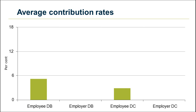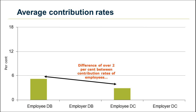Focusing on employees, this slide shows that the average employee in private sector defined benefit schemes contributed 5.2% of their salary to their pension in 2009. This compared with 2.9% for employees in defined contribution schemes. So there is a difference of over 2% in the contribution rates of employees in defined benefit and defined contribution schemes.